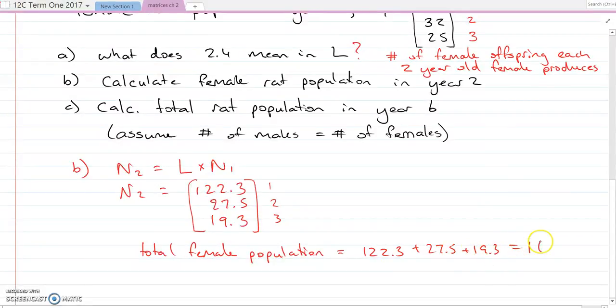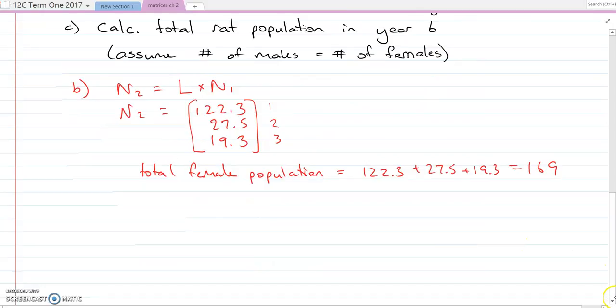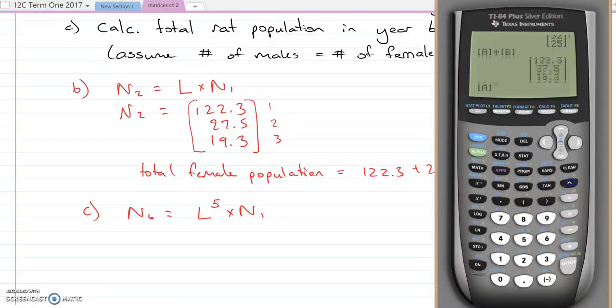Part c, what we do is N6 equals L to the six minus one is five times N1. So in the calculator, A to the power of five times matrix B, and there's my answer.